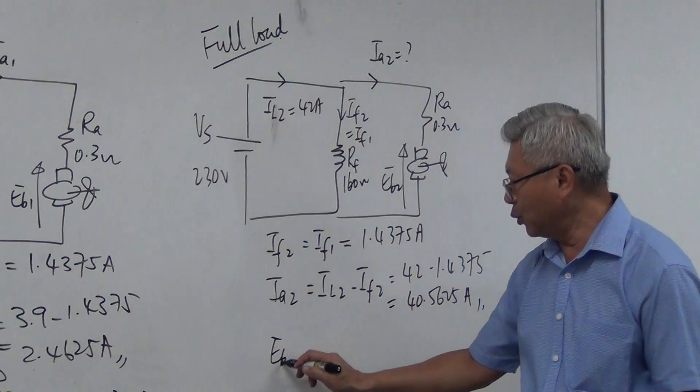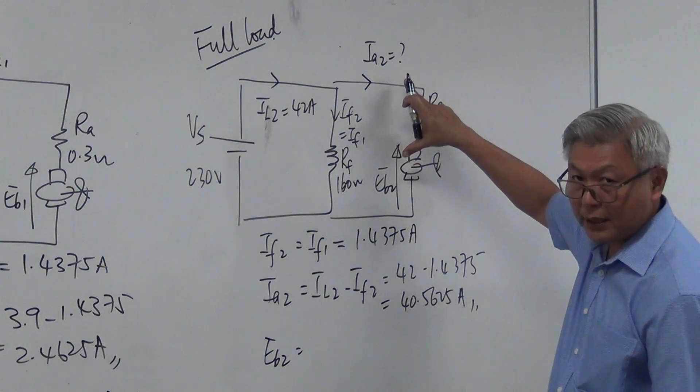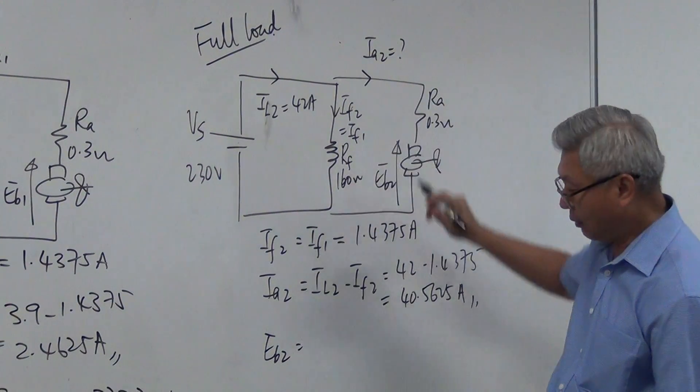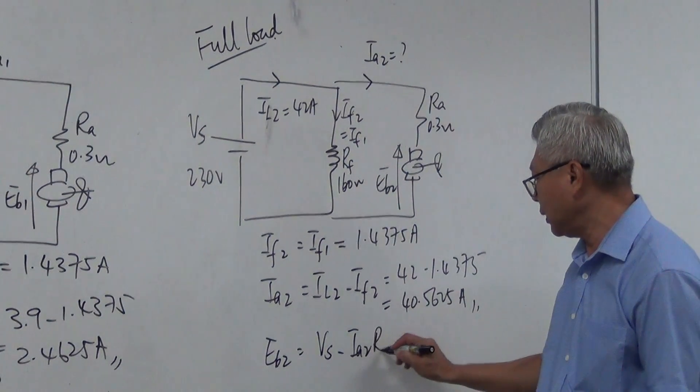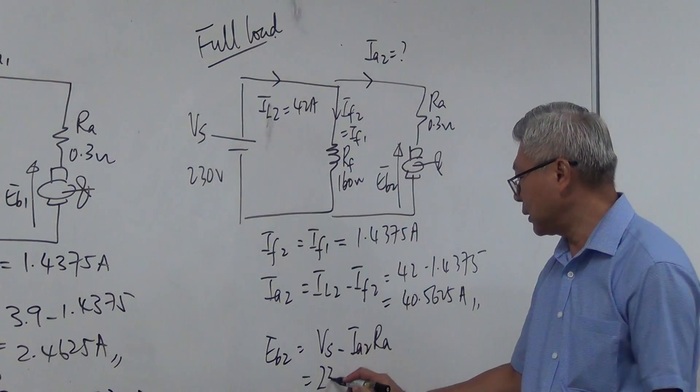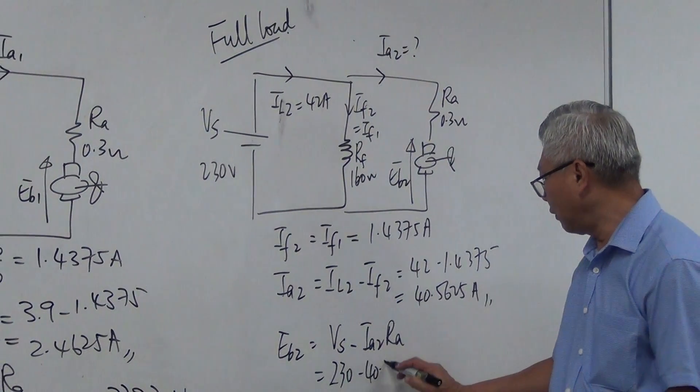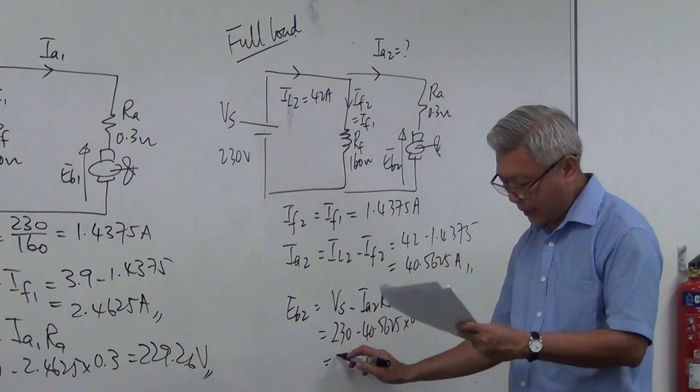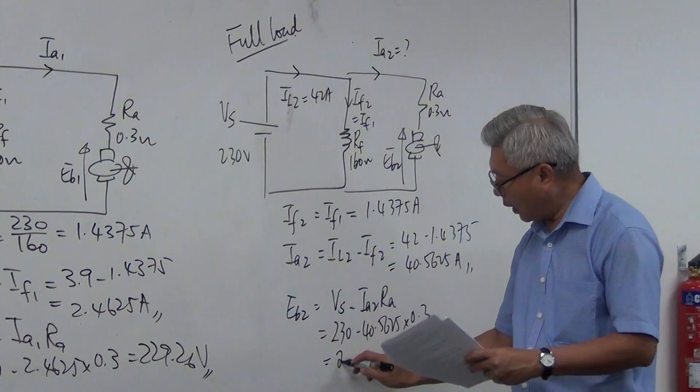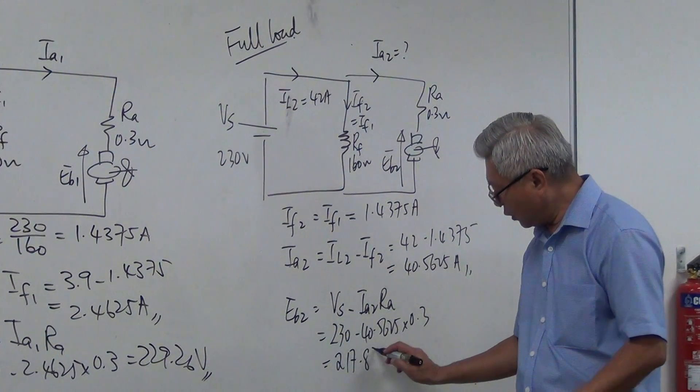Then I calculate Eb2. Eb2 is equal to Vs minus Ia times Ra. So that is equal to Vs minus Ia2 times Ra. So that is 230 minus 40.5625 times 0.3. And I get Eb2 is equal to 217.83 volts.